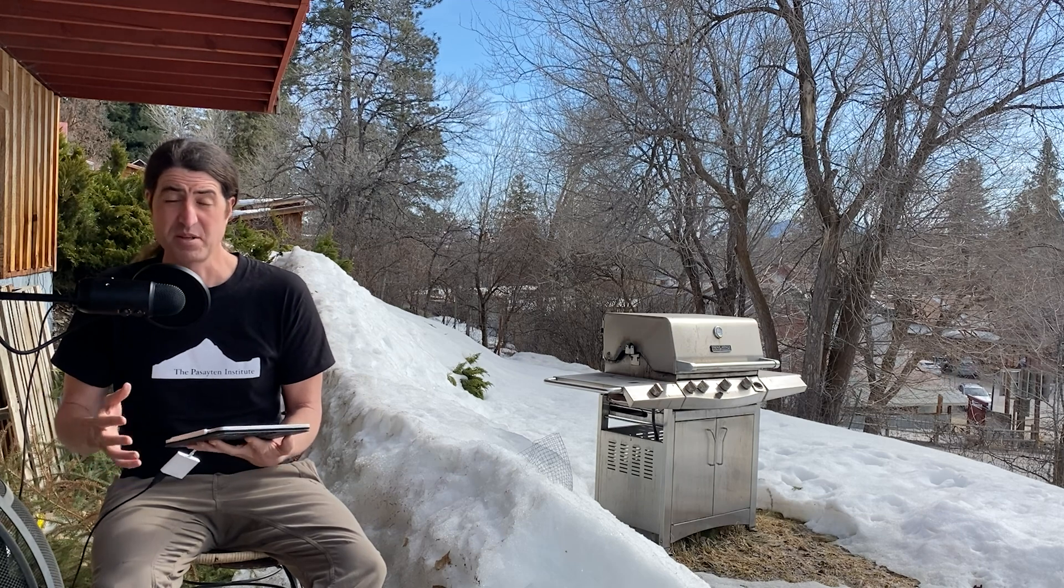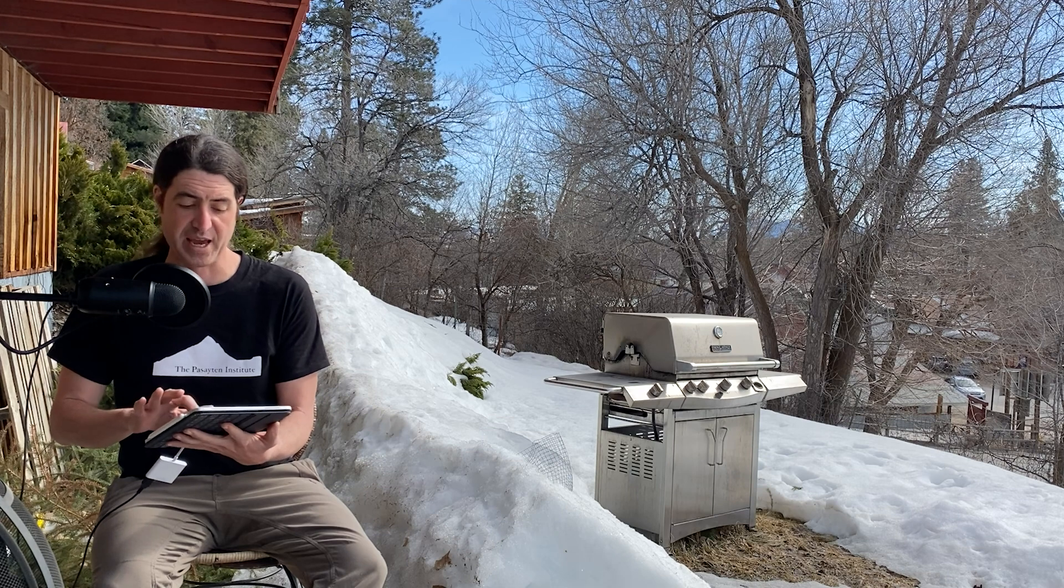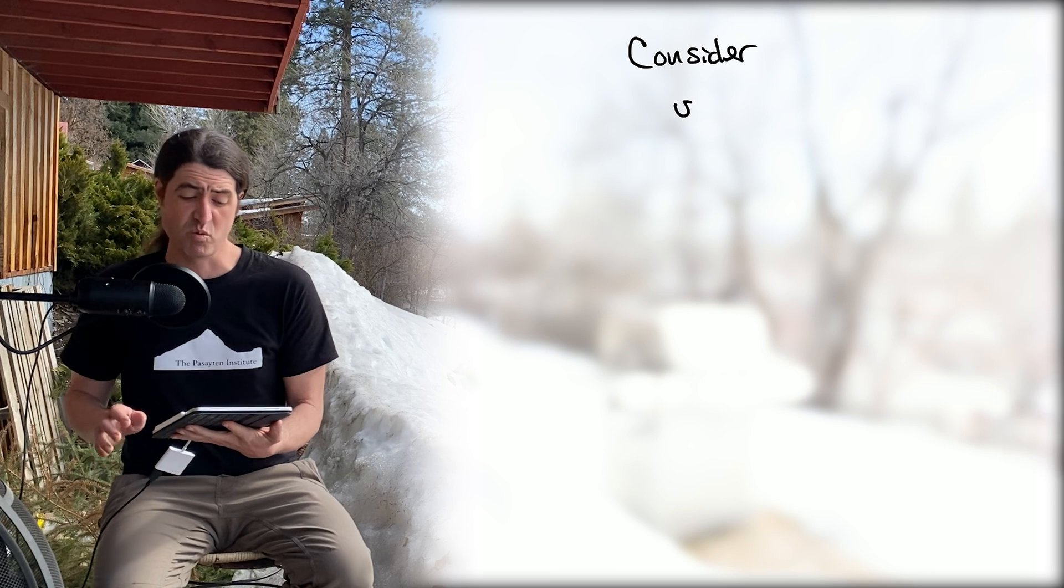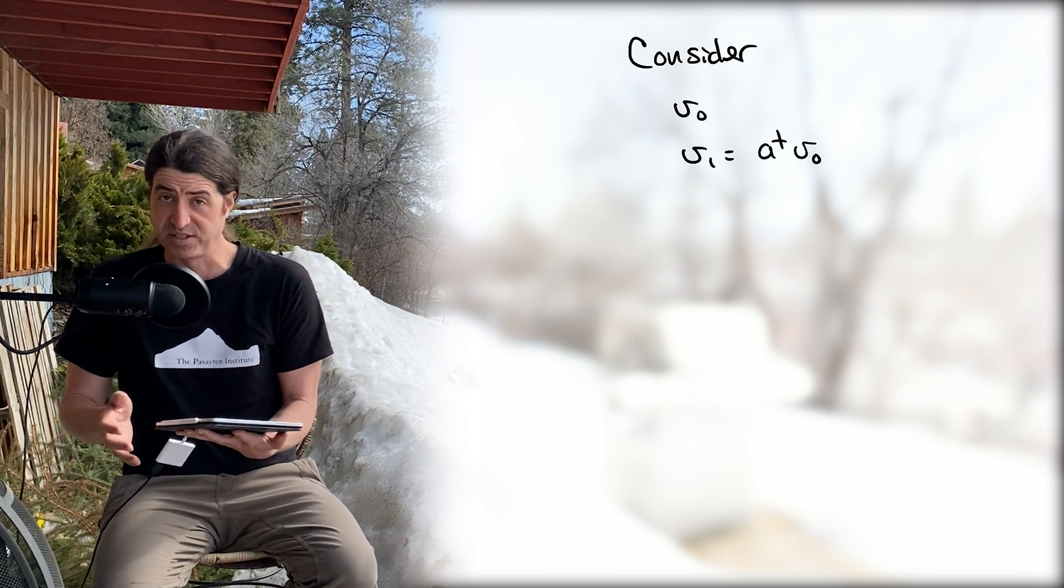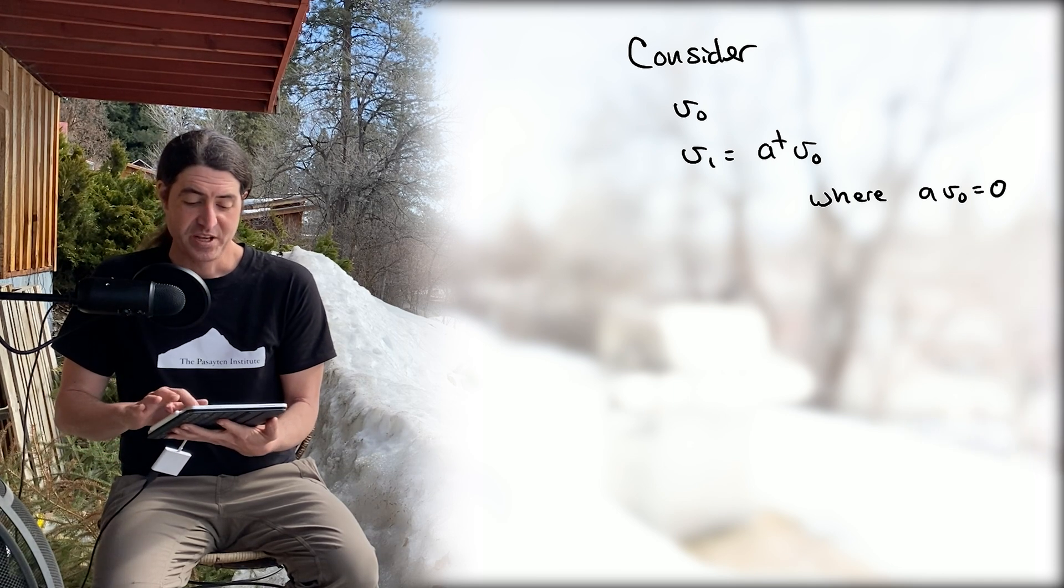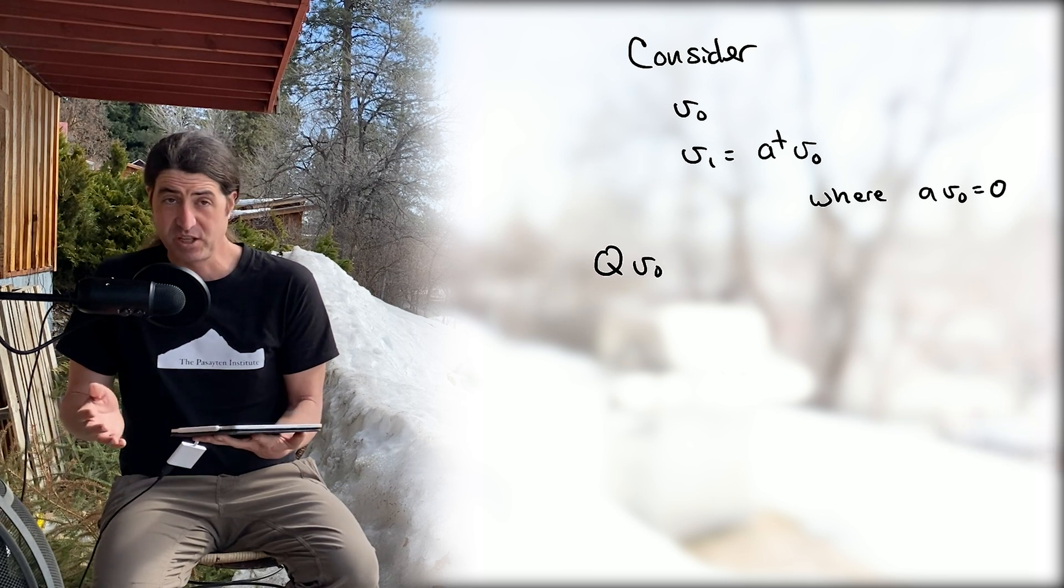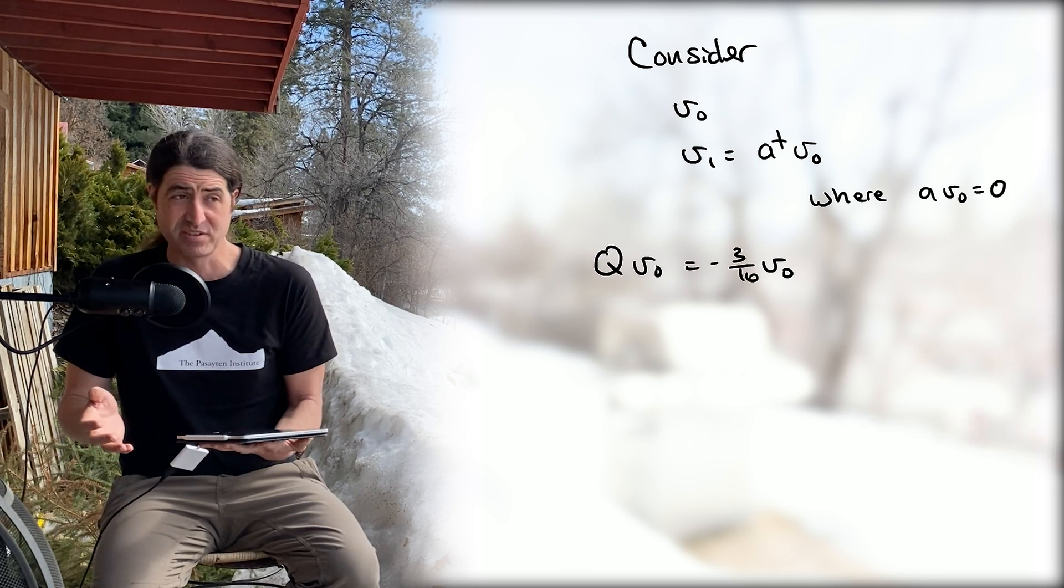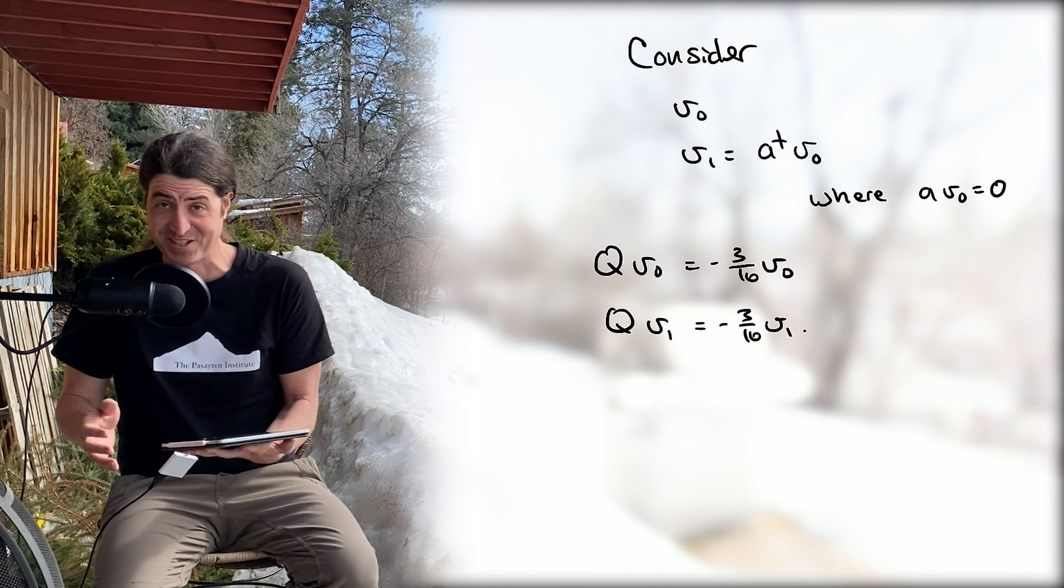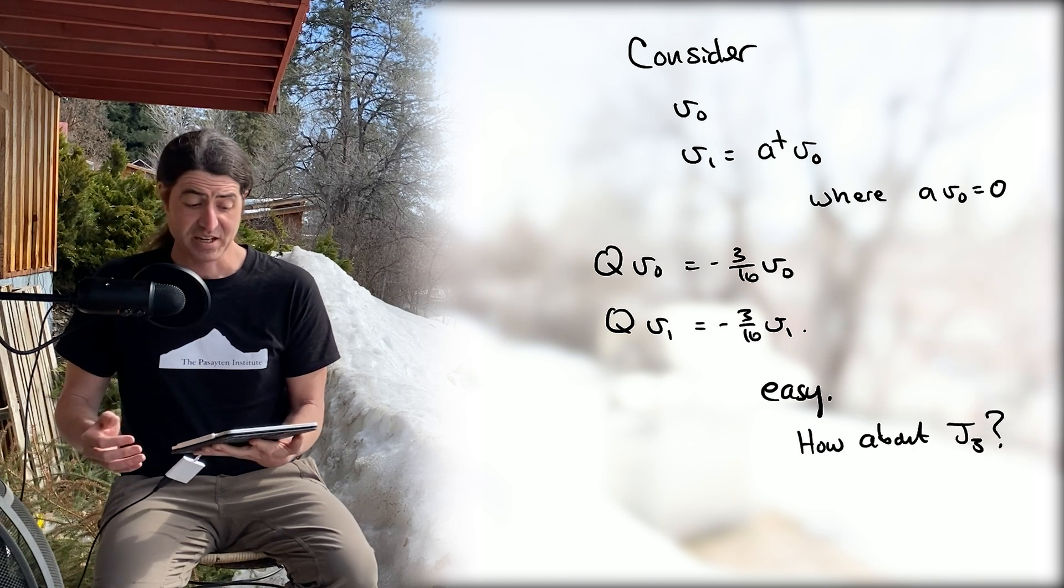Now let's talk about modules. Specifically, let's form some SU(2) modules from the A module H_A. To that end, consider two elements: v0 and v1, where v1 is just a dagger on v0, and of course a acting on v0 vanishes. Let's consider the action of Q and J3 on these two vectors. Since Q is proportional to the identity, it's trivial in both cases—just minus three sixteenths.